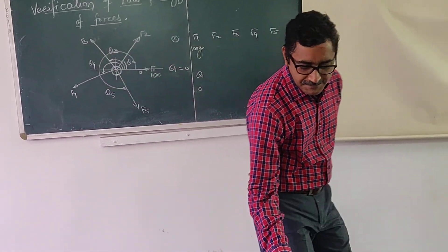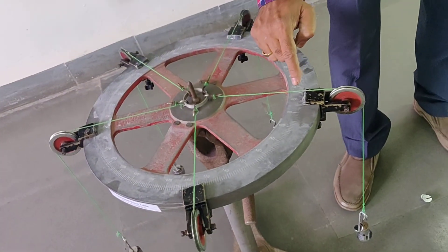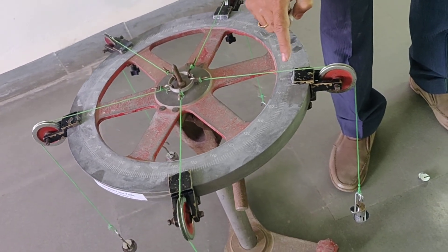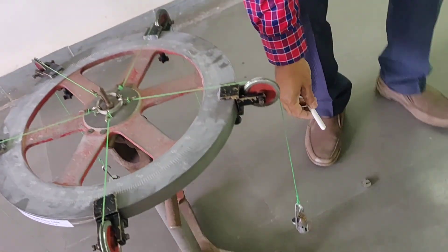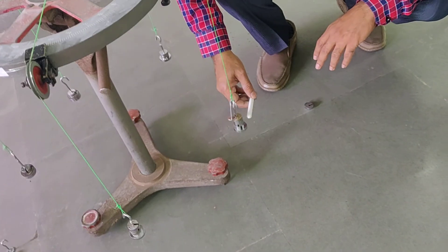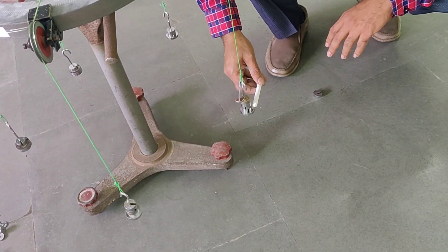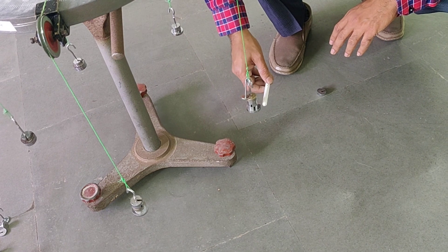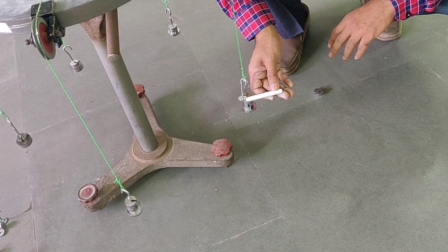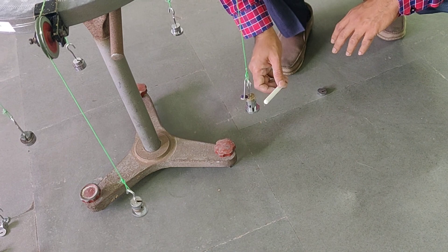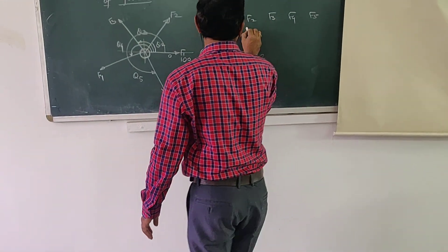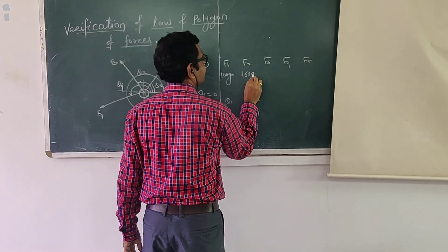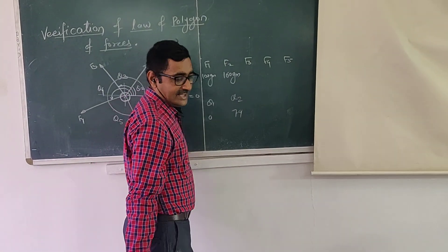The second force F2 is at an angle of 79 degree — theta 2 is 79 degree. The weight applied here is 50 plus 25 plus 25 plus 25 plus 25, which is 150, plus this small weight of 10 grams — so 150 plus 10 gives 160 grams. F2 force is 160 grams, which is applied at an angle of 79 degree with the positive x-axis.